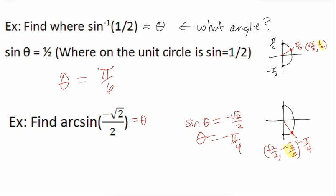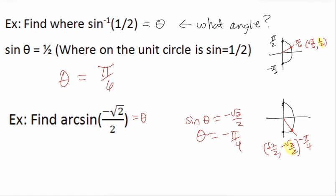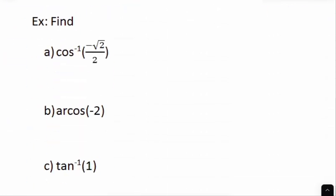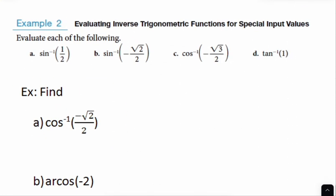Cosine, secant, and cotangent are a little more difficult because we have to look between 0 and π. You have to think about where the cosine is positive and where it's negative.